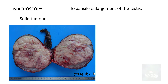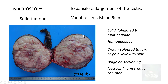Macroscopically, seminomas are often solid tumors resulting in expansile enlargement of the testis. Mean size is around 5 centimeters. On gross examination, they are solid, lobulated, and multinodular on the external surface. The cut surface is homogenous with distinct nodularity, cream-colored to tan, sometimes pale yellow to pink. The cut section often bulges, with areas of necrosis and hemorrhage visible, particularly in larger tumors.